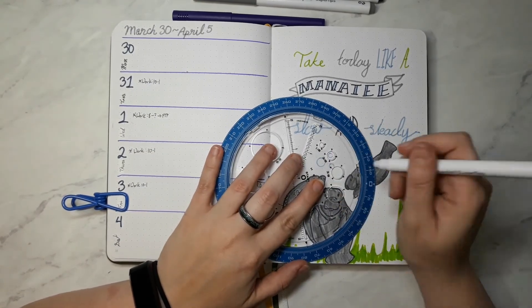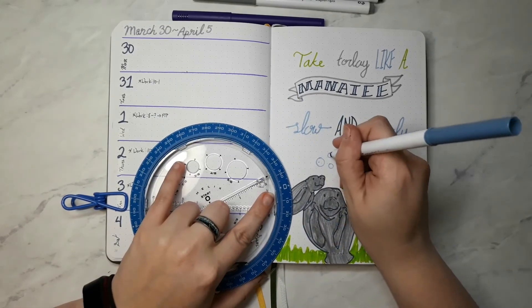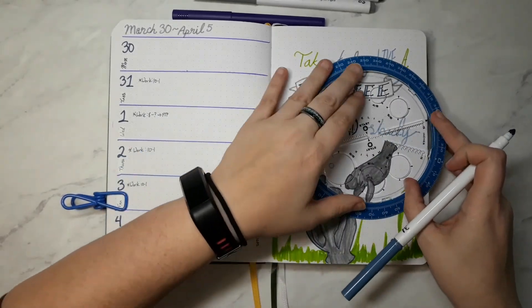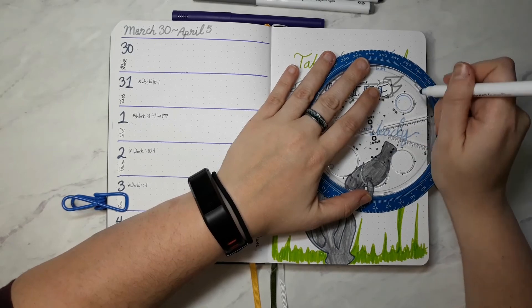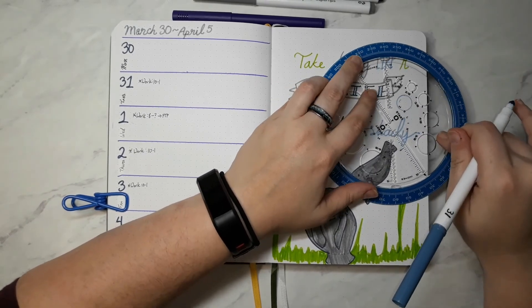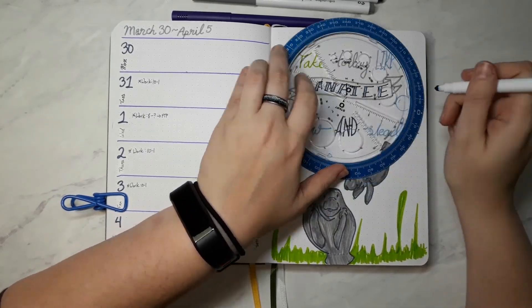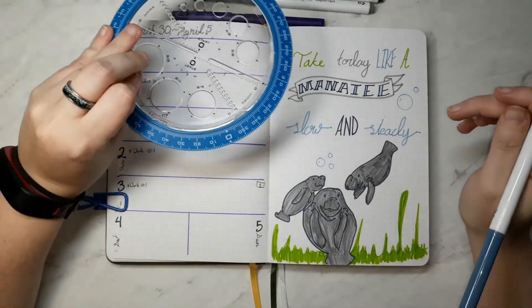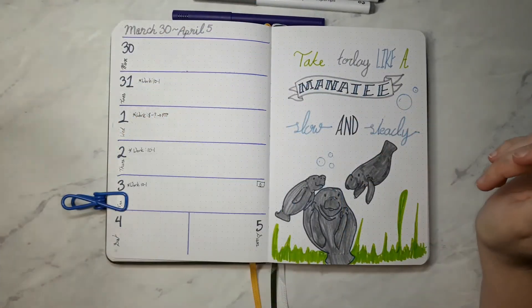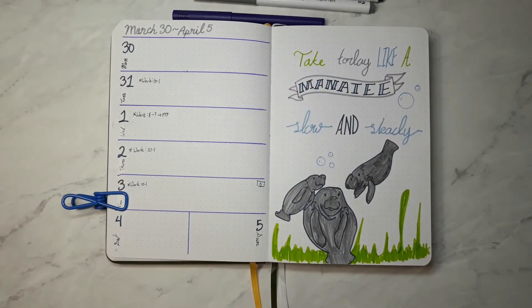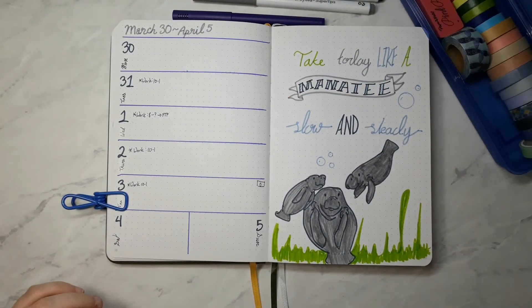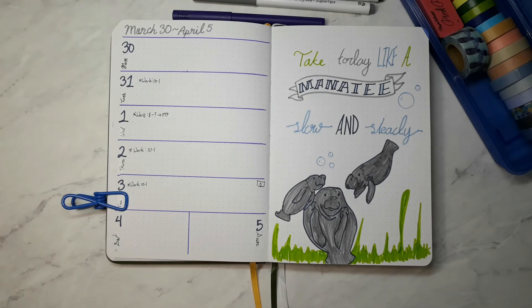You'll see my pencil case. I have recently had some washi tape come in. I bought some off of Wish which I might use in my May spread, but I don't quite know yet. All of my washi tape fits in that pencil case, which I bought for 65 cents. Yeah, minimalist.